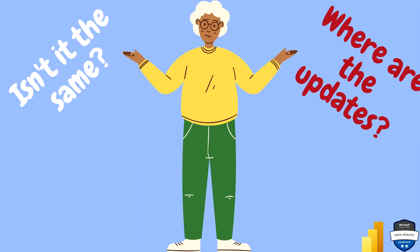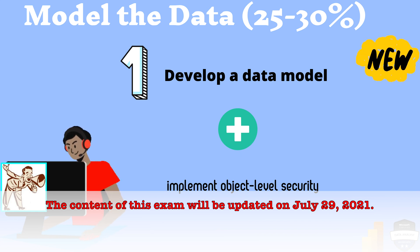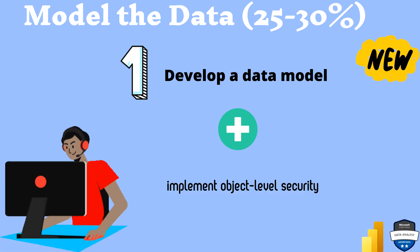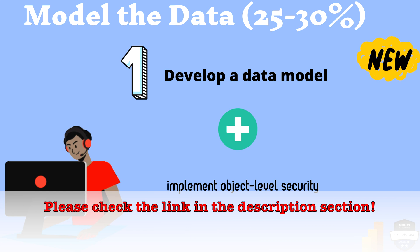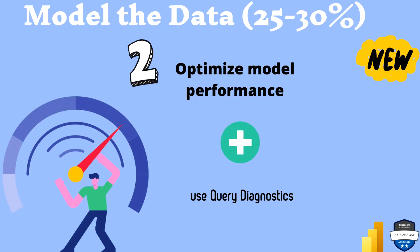You may be wondering — those are the same skills as before, so what are the updates? On 29th of July 2021, Microsoft is updating the syllabus. The skills remain the same, but inside Model the Data (25 to 30%), there will be two additional topics. The first is under Develop a Data Model: Implement Object Level Security. I have already explained this in one of my videos, so please check the link in the description.